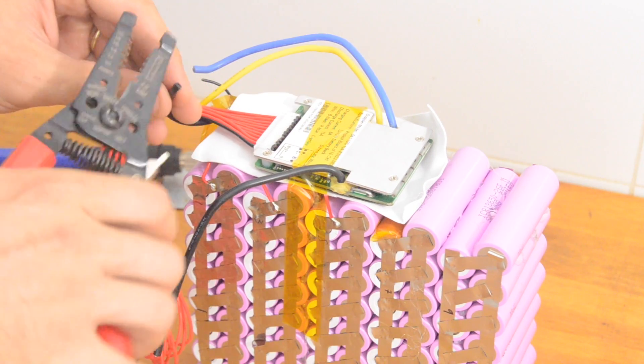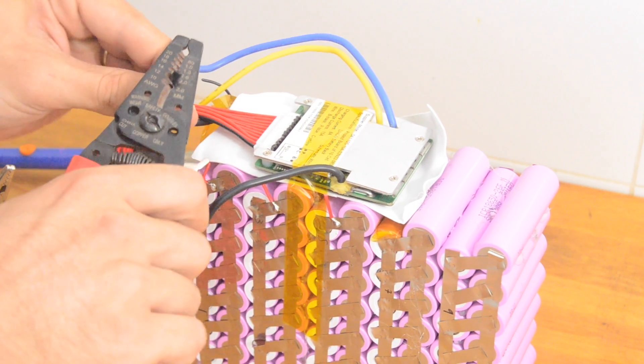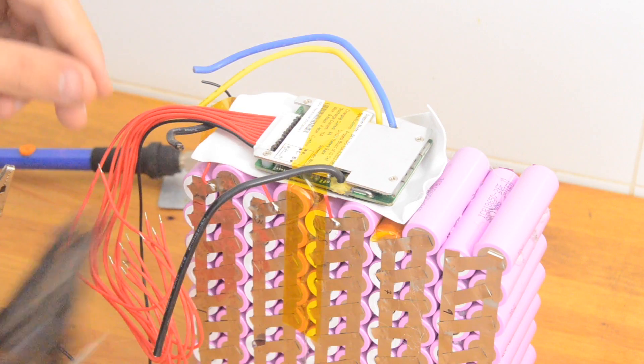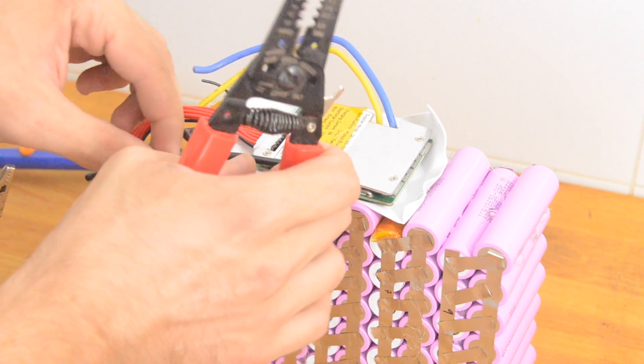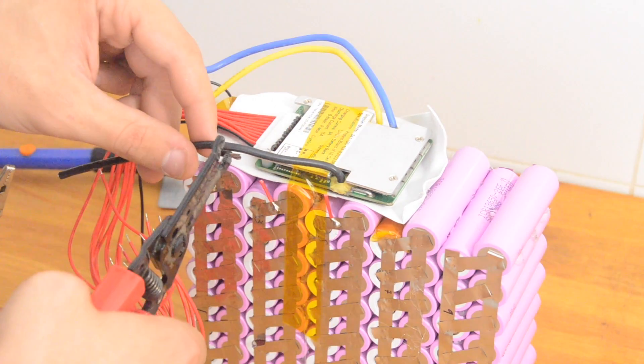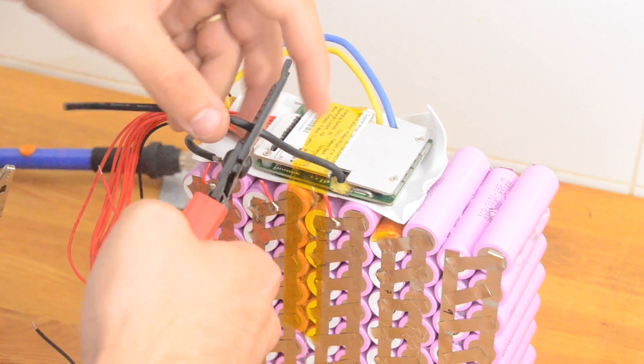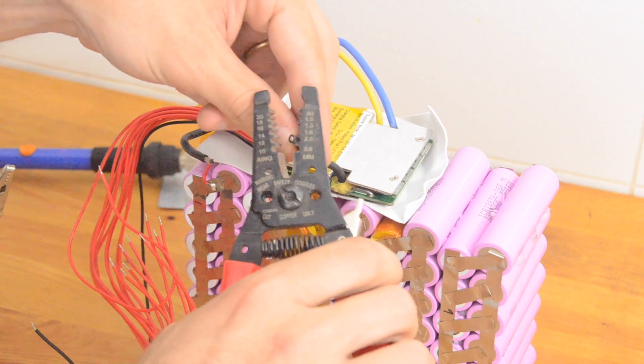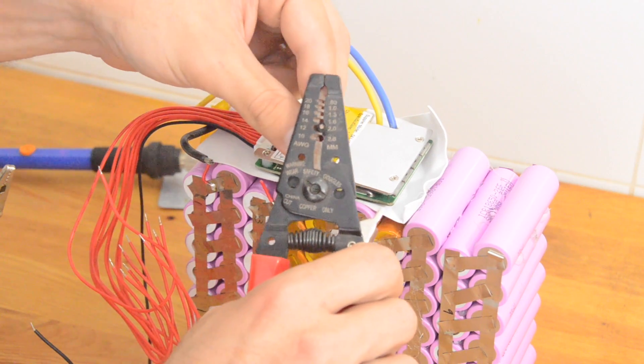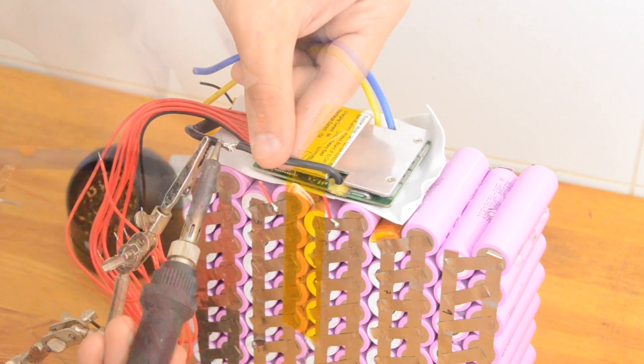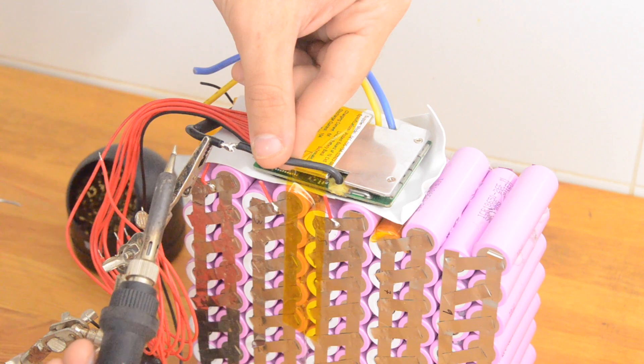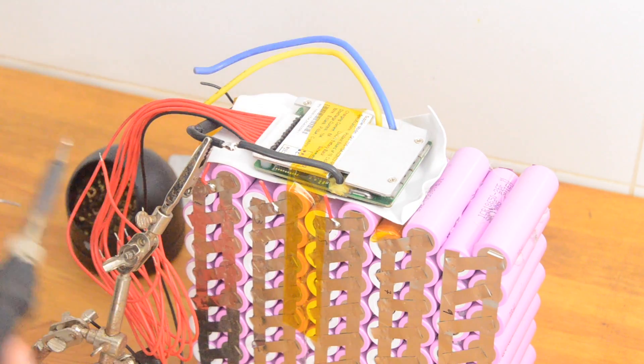Now for the new BMS, we're going to start by connecting the B minus wire, the big fat black wire here. And that's the one that's going to go to the negative end of your entire battery, the negative end of the first cell group. So I'm going to strip the wire here, and I'm going to solder this directly to the B minus wire on the BMS itself. And I'm going to make sure I've got my piece of heat shrink on here also for good measure.